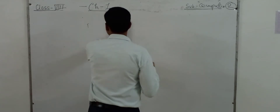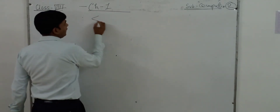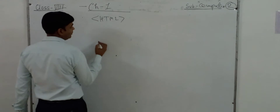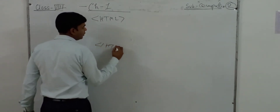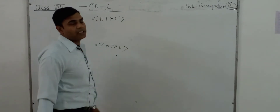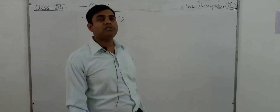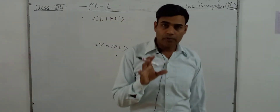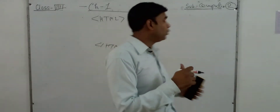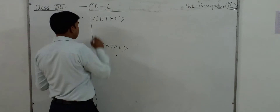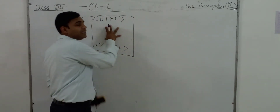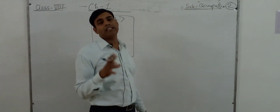The first tag we saw was the HTML tag. HTML tag has an opening and a closing. This HTML tag basically forms the main area for the HTML code. So if we have an HTML tag, whatever we have written inside it will be considered as code for an HTML page.